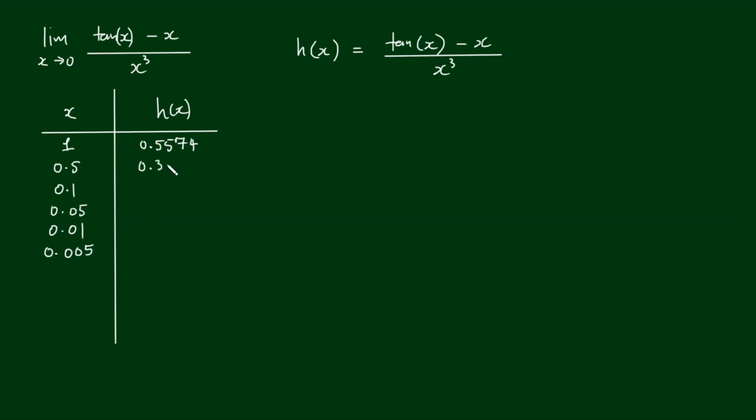With x equals 0.1, I get 0.3347. With x equals 0.05, I get 0.3336. With x equals 0.01, I get 0.3333. And with 0.005, I also get 0.3333 to the first four decimal places.